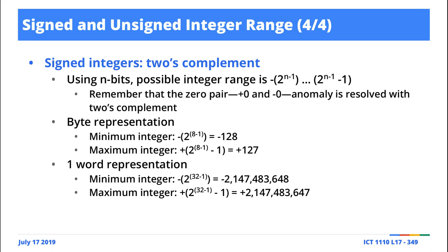Observe the difference: for one's complement we were subtracting one from both sides. But in the case of two's complement, because we no longer have the problem of a negative zero, the additional placeholder bit is allocated to a negative number. So we represent a range of negative two to the power n minus one, all the way up to positive two to the power n minus one, minus one. Using two-bit representation, what is the range we can represent using two's complement?